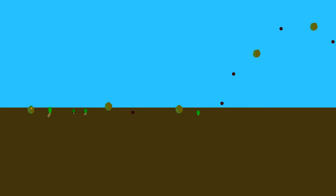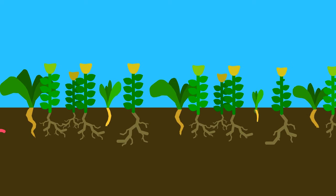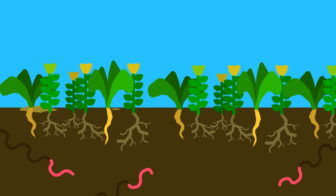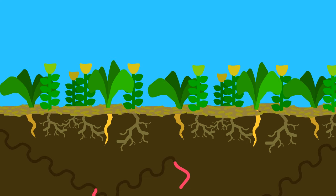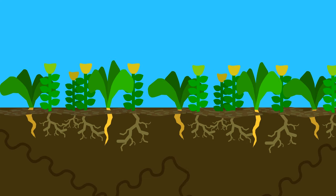Instead of tilling, plant cover crops whose roots break up the soil. Let the worms aerate the soil and bring down nutrients. Keep the soil covered with an organic mulch, which will break down over time, adding more organic matter to the soil.